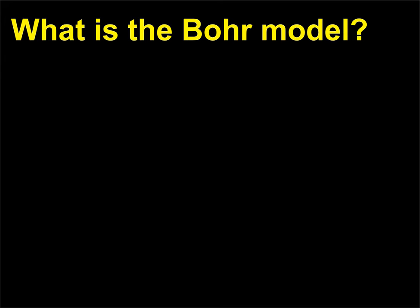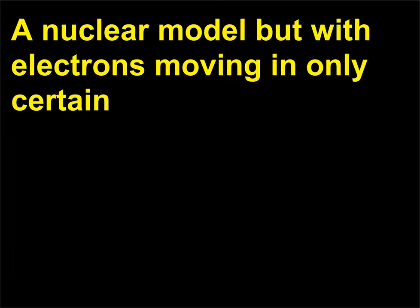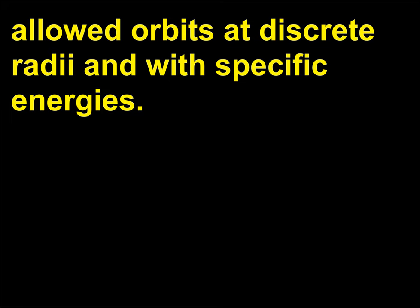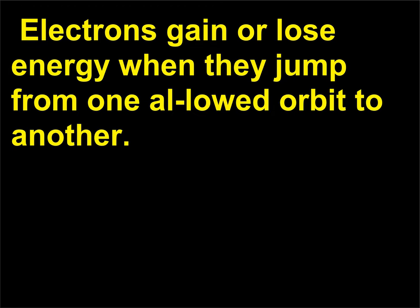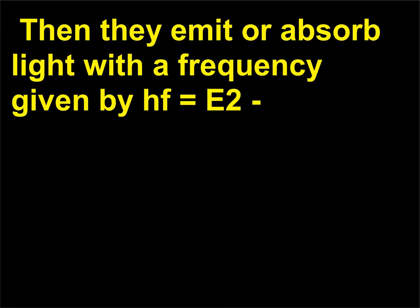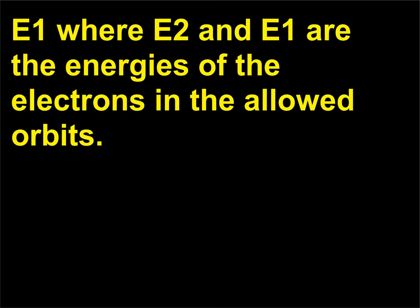What is the Bohr model? It is a nuclear model with electrons moving in only certain allowed orbits at discrete radii and with specific energies. When in these orbits, their radii and energies are constant and the atoms do not emit or absorb radiation. Electrons gain or lose energy when they jump from one allowed orbit to another; they then emit or absorb light with a frequency given by hf = E₂ − E₁, where E₂ and E₁ are the energies of the electrons in the allowed orbits.